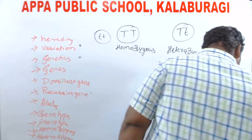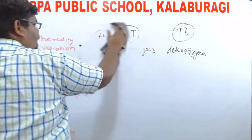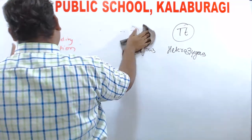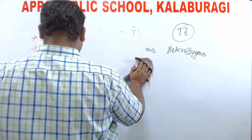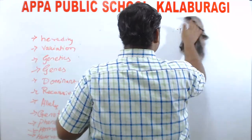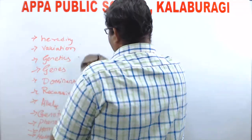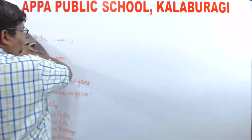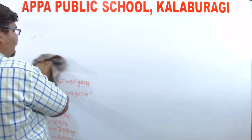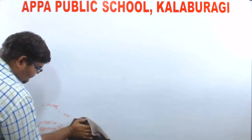I would like to wind up the class here with a few more concepts. Today we have learned about heredity, variation, genetics, genes, dominant gene, recessive gene, alleles, genotype, phenotype, and homozygous and heterozygous conditions. Next we will deal with further concepts.